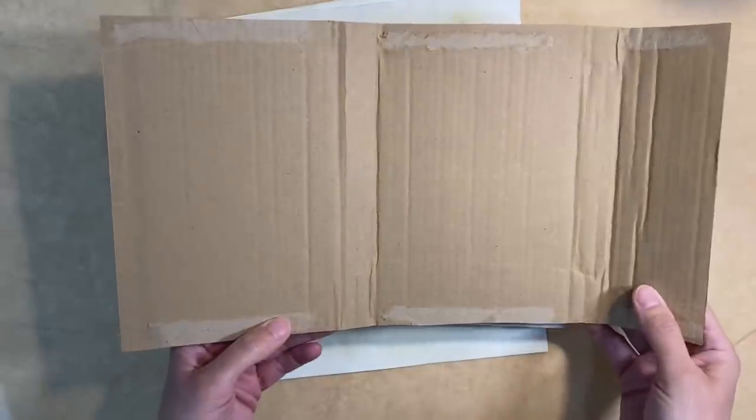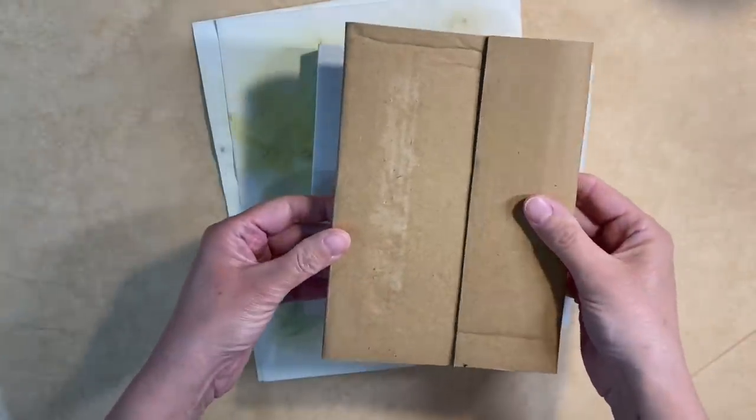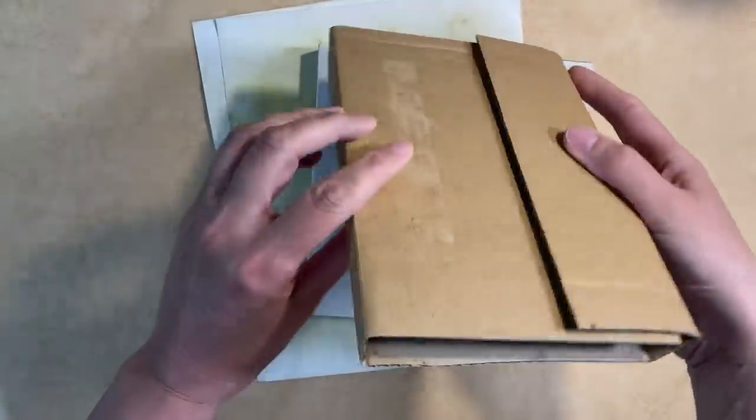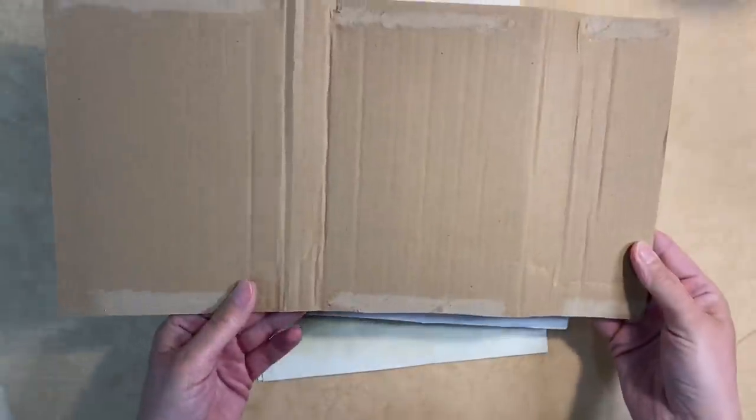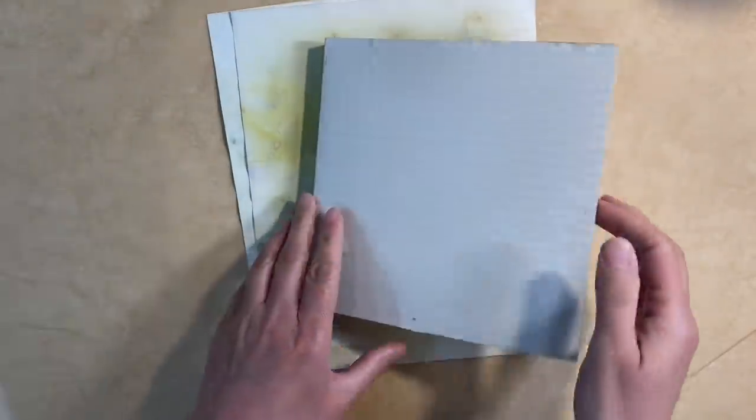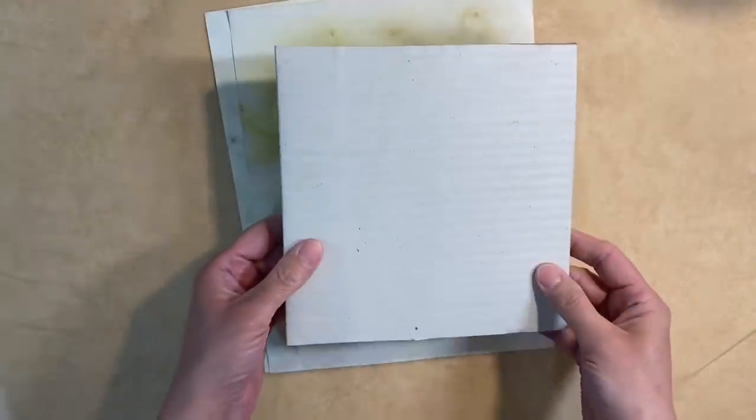Now I've just taken all of the flaps off my Amazon box just so that you can see what it looks like if you decide to use something like this. Perfectly usable now. So that's that. But I'm going to stick with this one here and I might use the Amazon box for something else.